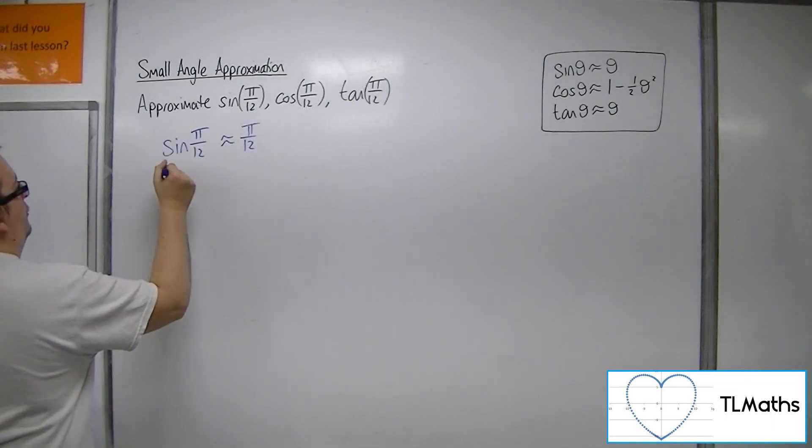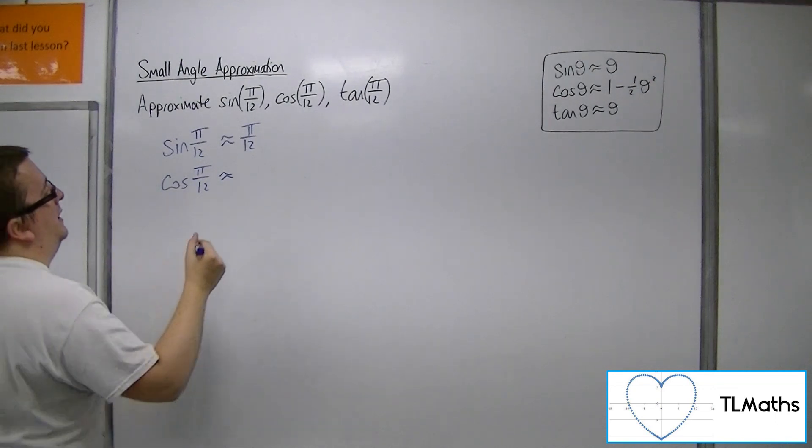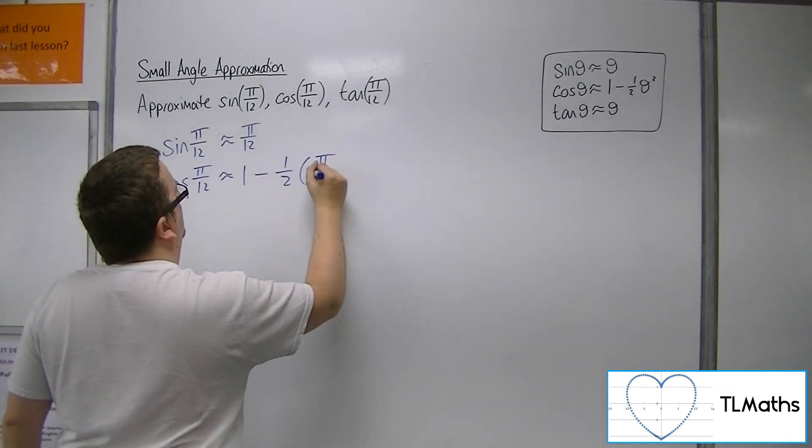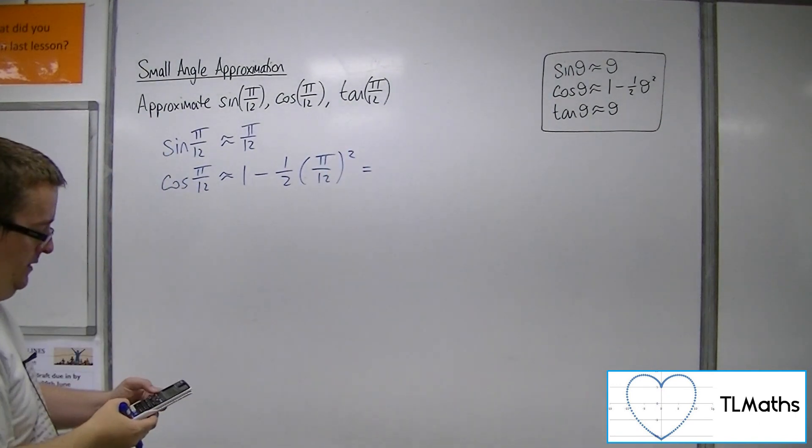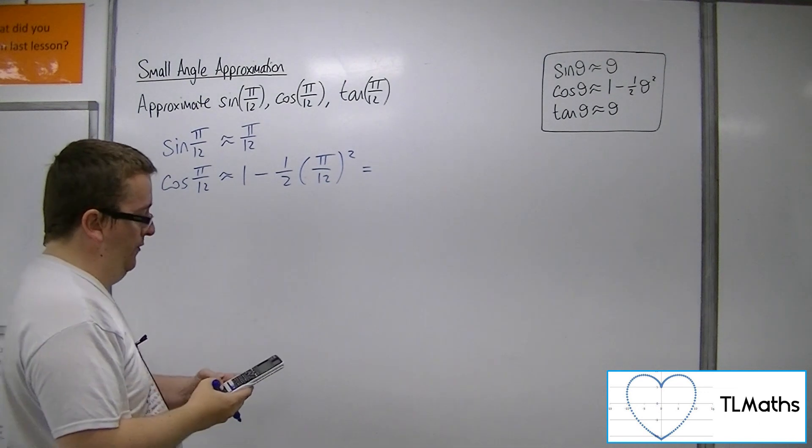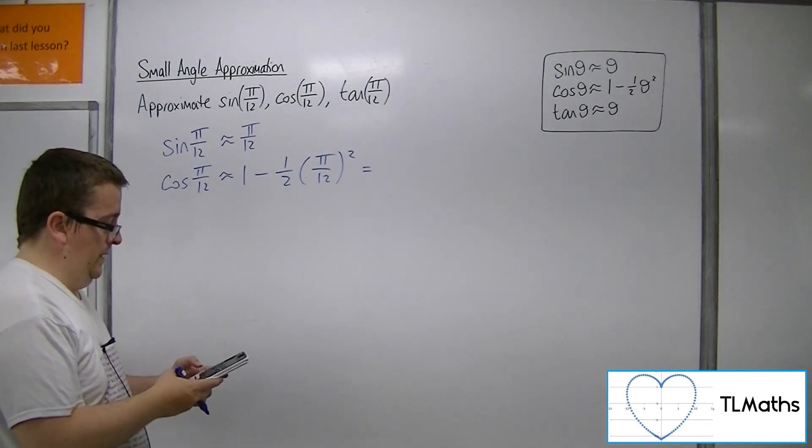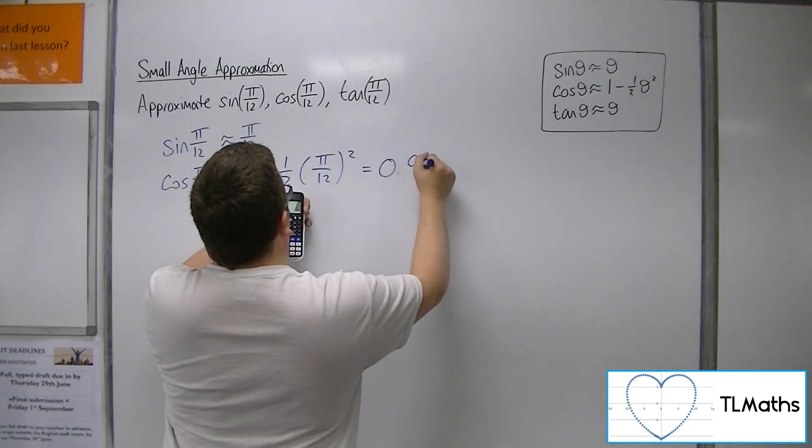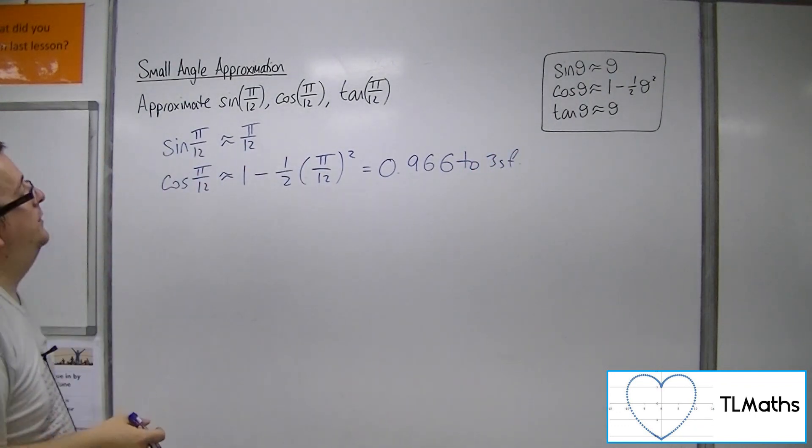OK, so cosine of π/12 is going to be approximately one minus a half of (π/12) squared. So π/12 squared, half of that, one minus that, is 0.966 to three significant figures.